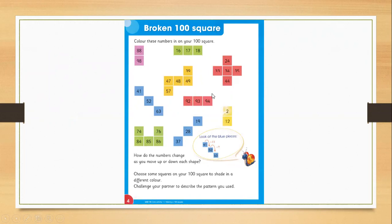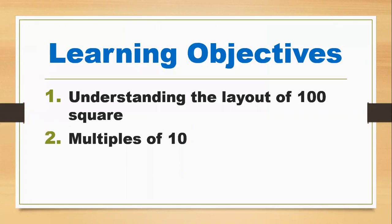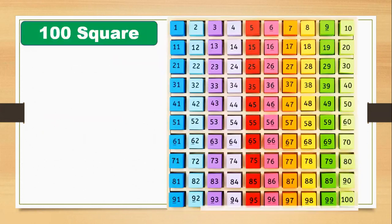We will find these numbers on the 100 square layout. Here are the two objectives we discuss today. The first objective is to understand the layout of the 100 square — you must know the counting from 1 to 100. Then we will find out the multiples of 10. So here are the two objectives we are learning today.